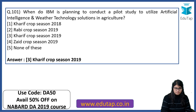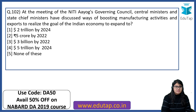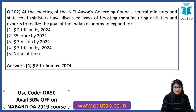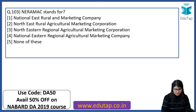At the meeting of the NITI Aayog governing council, central ministers and state chief ministers discussed ways of boosting manufacturing activities and exports to realize the goal of expanding the Indian economy to 5 trillion dollars by the year 2024. NARAMAC stands for Northeastern Region Agricultural Marketing Cooperation.